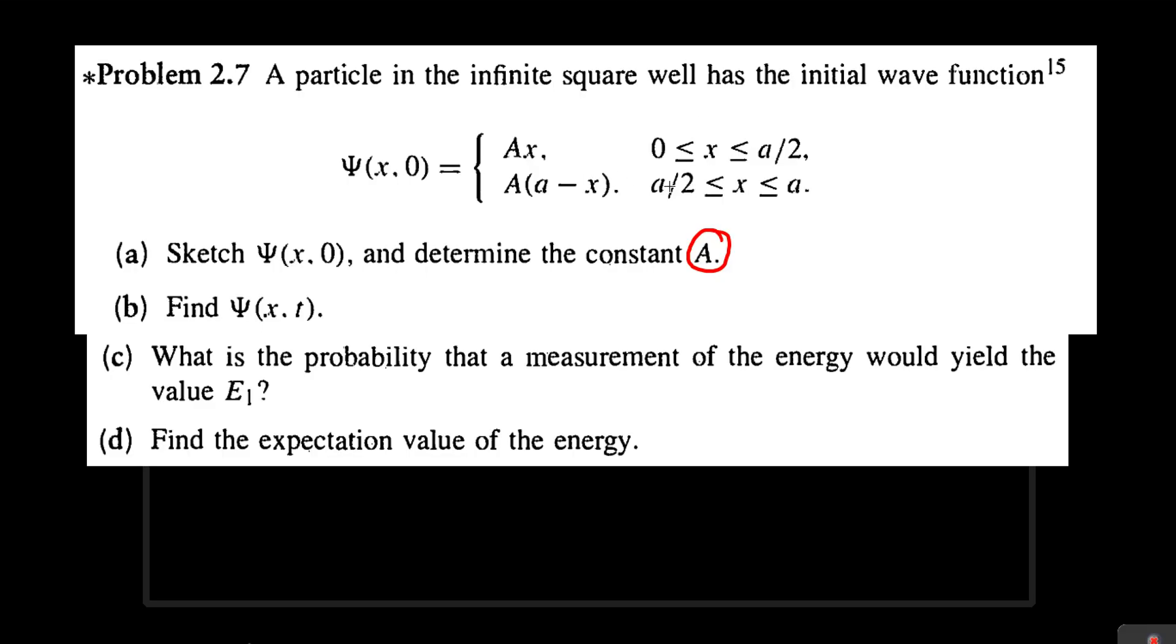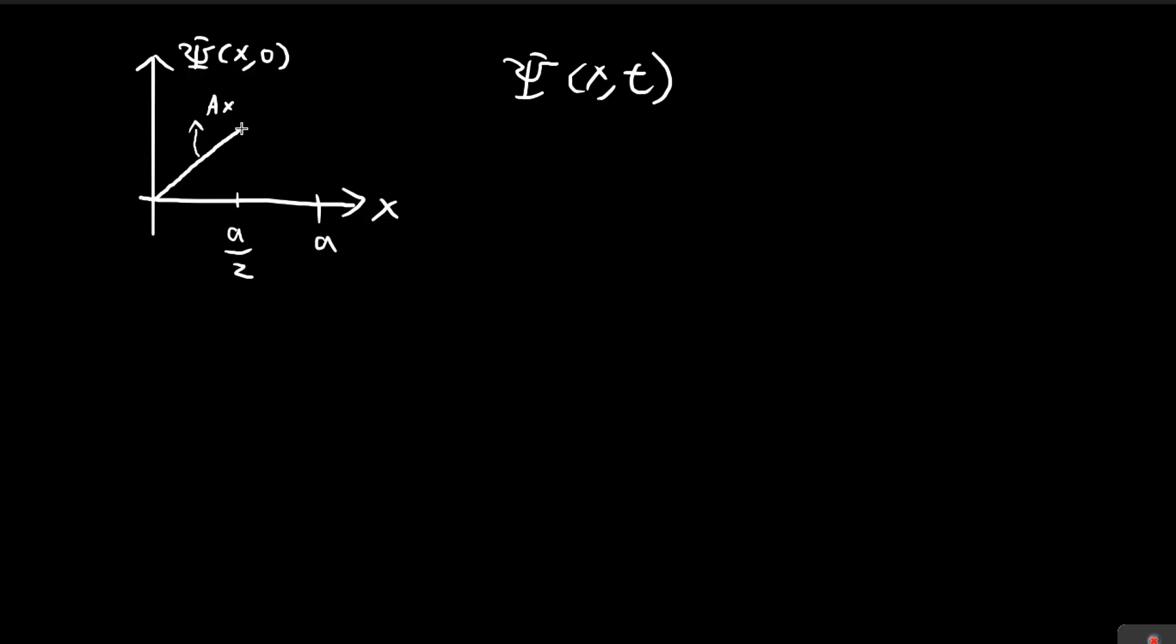And then for the remaining section from a over 2 to a, it's going to go back down in a straight line. And then this section here would be capital A times a minus x. So now our task is to find the value of this capital A over here.